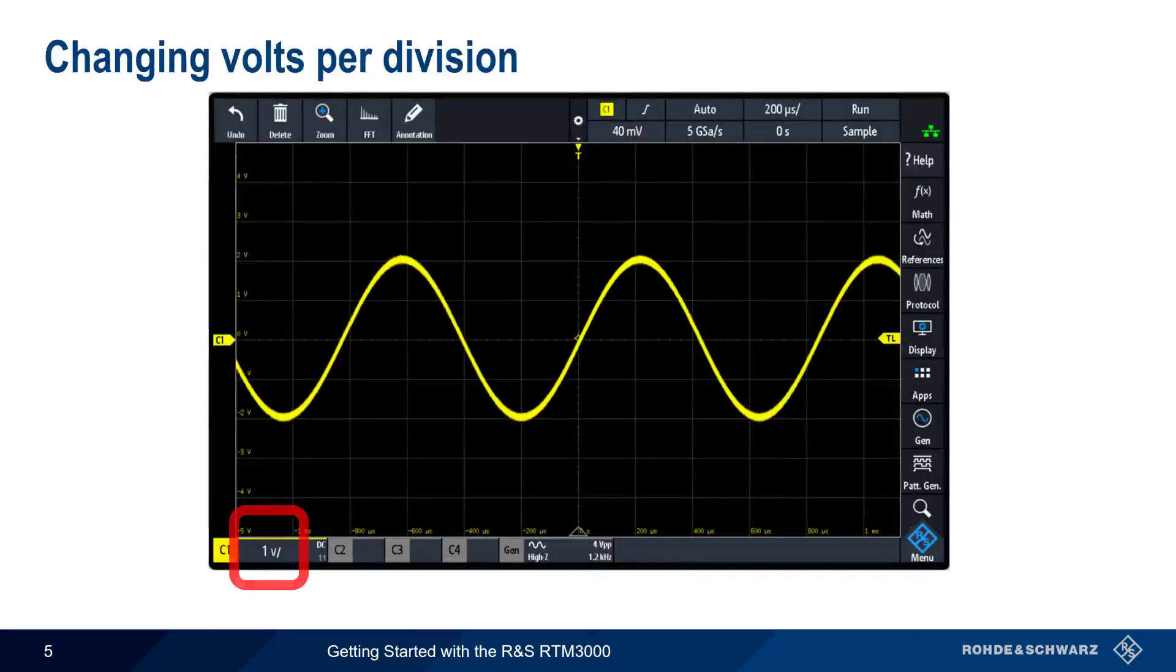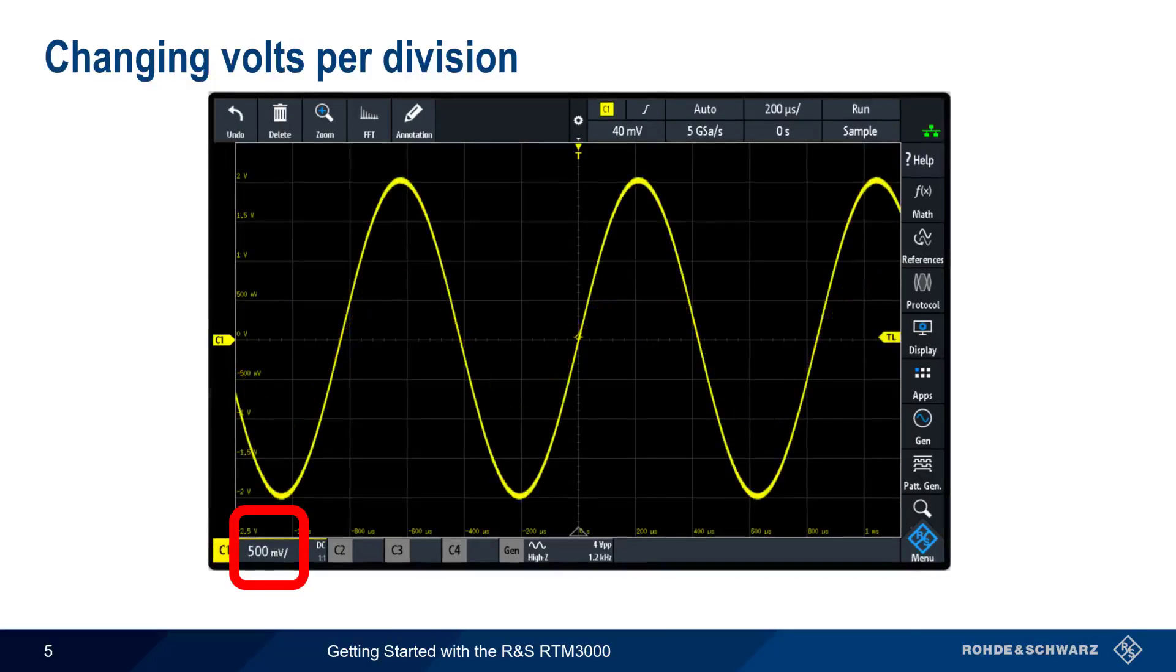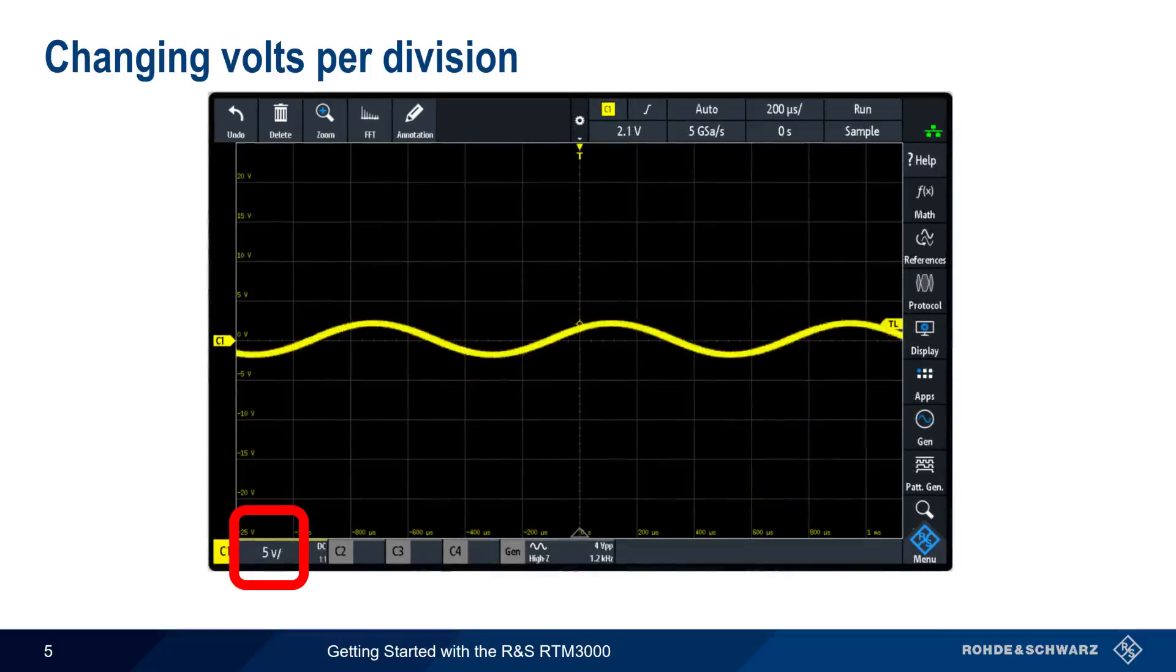Recall that in most cases, we want to adjust Volts Per Division such that our waveform almost fills the screen, since this maximizes the use of the bits in the scope's analog to digital converter. Having Volts Per Division set too high not only means that we're not using all of the ADC, it also makes it much harder to visualize a waveform or accurately measure it.